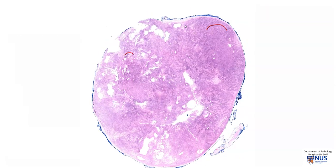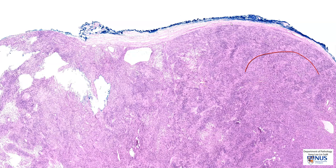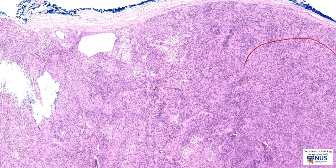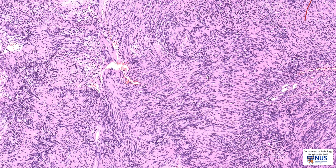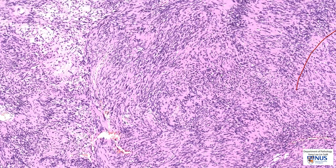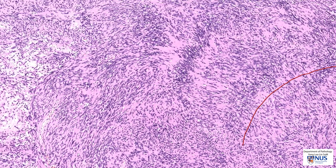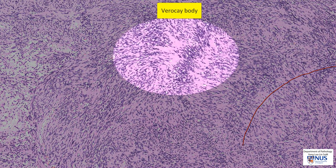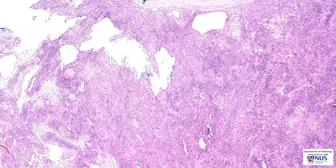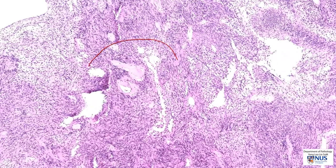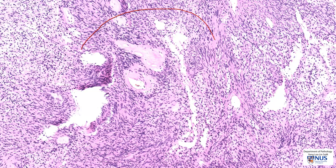In summary, this is a schwannoma — an encapsulated tumor composed of biphasic areas of more cellular Antoni A areas and less cellular Antoni B areas. The cells have spindled slender nuclei with ill-defined cytoplasm, and we can see very prominent nuclear palisading. This is a Verocay body with a double nuclear palisade and intervening fibrillary eosinophilic areas. This tumor also demonstrates hyalinized blood vessels. This is a benign tumor, and excision is curative. Thank you.